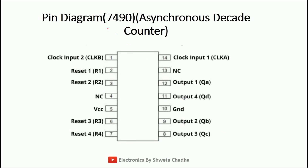Now here comes the PIN diagram. 7490 is the IC number that we are going to use. 7490 is known as an asynchronous decade counter. Now let us discuss this PIN diagram. The 7490 consists of total 14 PINs. PIN number 1 is clock 2. PIN numbers 2 and 3 are known as reset PINs — R1 and R2.